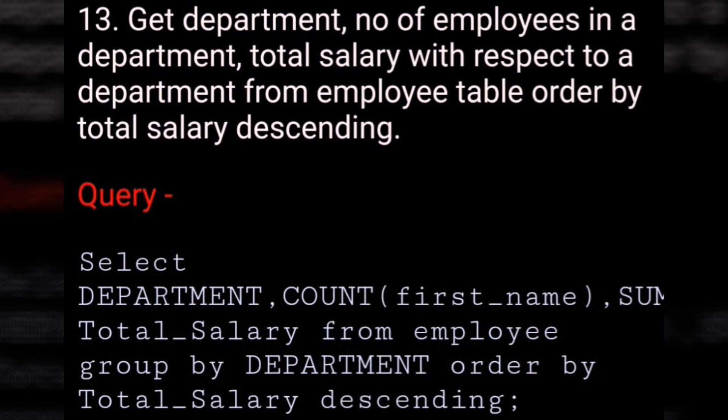Get department number, number of employees in a department, and total salary with respect to a department from the employee table, ordered by total salary descending. SELECT department, COUNT(first_name), SUM(salary) AS total_salary FROM employee GROUP BY department ORDER BY total_salary DESC.